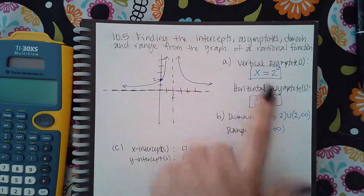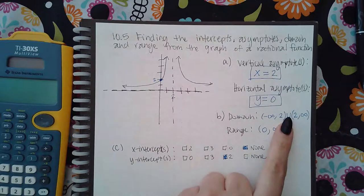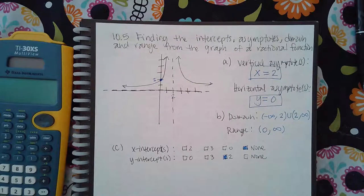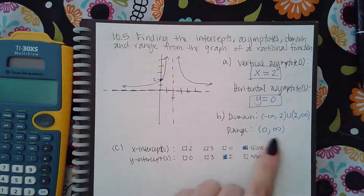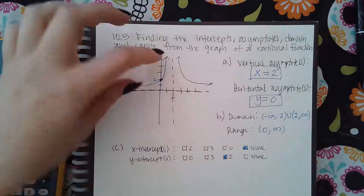If you have multiple vertical asymptotes, then you're going to have multiple breaks. And then your range, depending on the graph, because sometimes this piece will be down here and so then you just have a break at the horizontal asymptote.